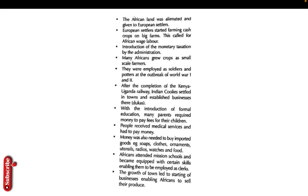How the colonial administration affected the economy of African traditional society: number one, land was given to European settlers, some of whom are still there today. For example, the De La Mer family owns large pieces of land. African land was alienated and given to European settlers, who then started growing cash crops on that land.